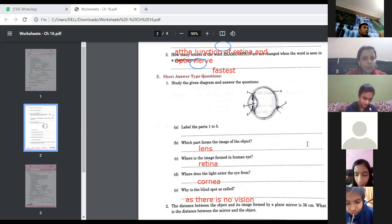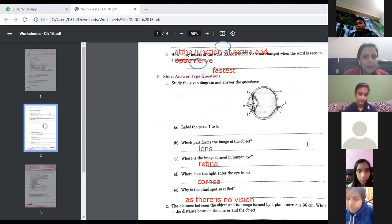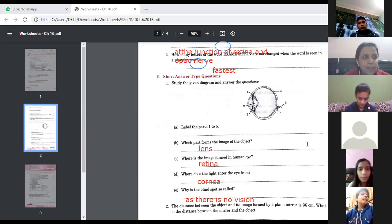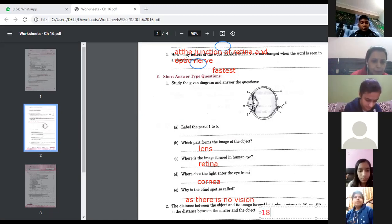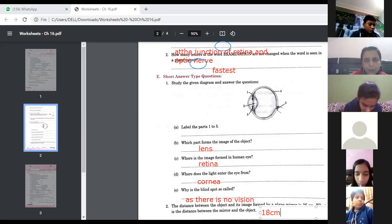Next question number two, the distance between the object and image formed by a plane mirror is 36 centimeter. Now what is the distance between the mirror and the object? The answer will be half of it, because you know that the distance between the mirror and object is same as the distance between the mirror and the image. So your answer will be 18 centimeter. But you have to give the reason also. So this was your worksheet number 31, we had completed.